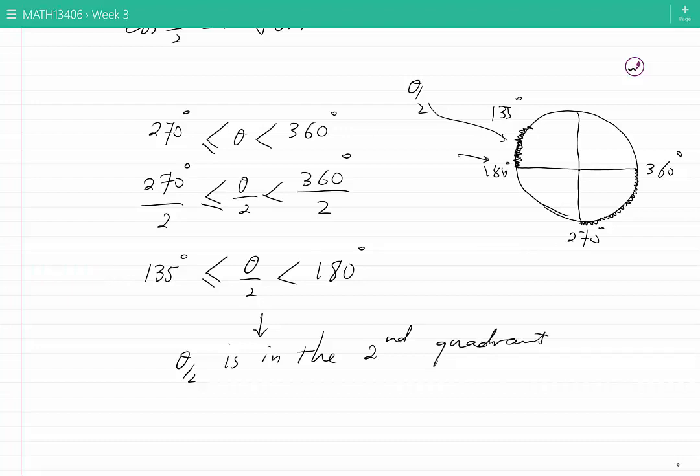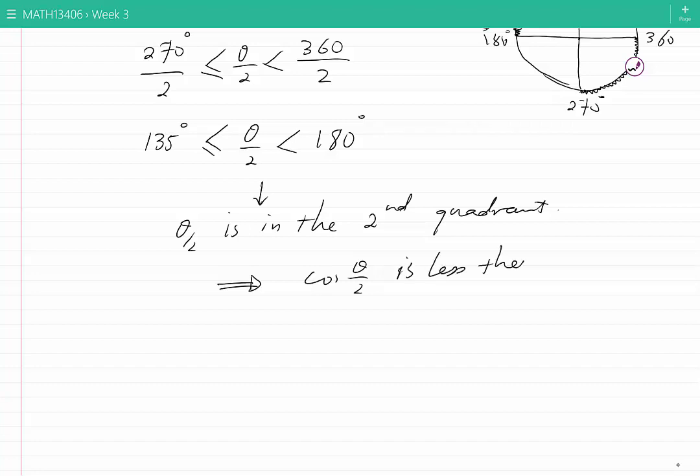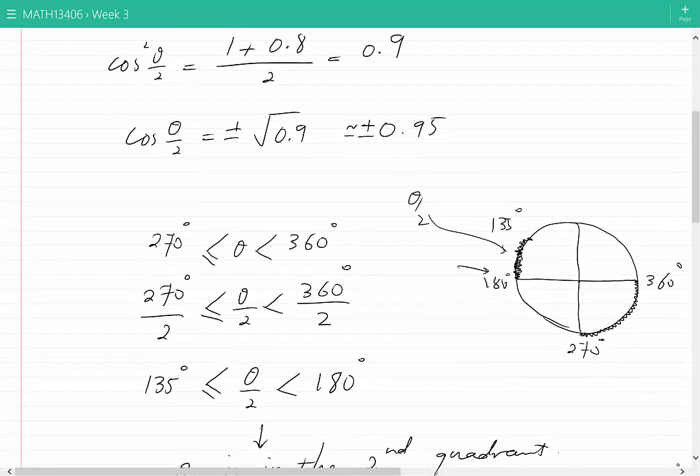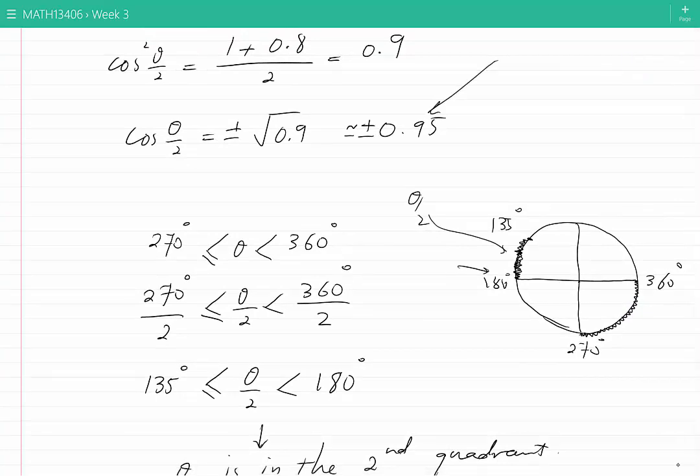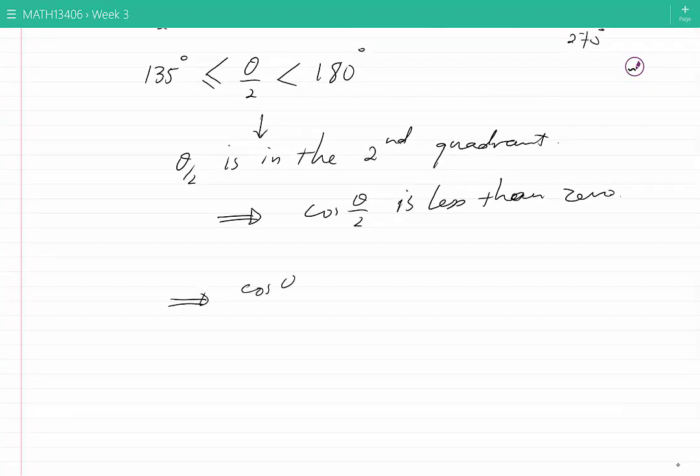As a result, we have that cosine of θ/2 must be negative. Therefore, between the two possible answers that we have, we must choose the negative answer, which is approximately -0.95.